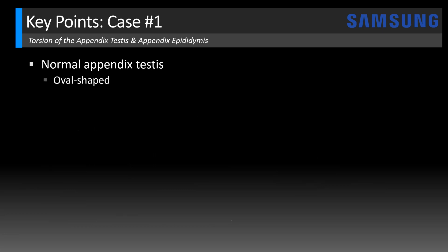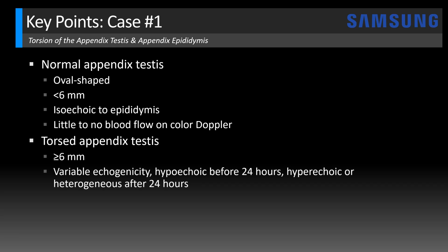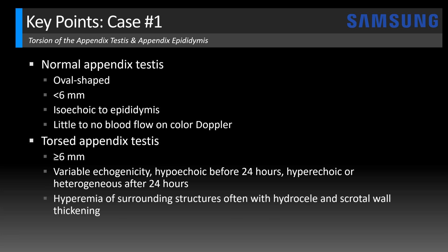A normal appendix testis will typically be oval shaped, less than 6 millimeters in size, homogeneously isoechoic to the epididymis, and show little to no blood flow on color Doppler imaging — so lack of blood flow alone is not a specific finding. A torsed appendix testis will typically be 6 millimeters or larger, which is a fairly specific finding. Echogenicity is variable: described as hyperechoic before 24 hours of torsion, then more likely hypoechoic or heterogeneous after 24 hours, as in this case. Hyperemia of surrounding structures with hydrocele and scrotal wall thickening is also often present. Interestingly, torsion appendages can detach and become free-floating in the scrotum; over time these can calcify and evolve into scrotal pearls or scrotaliths encountered incidentally on ultrasound.